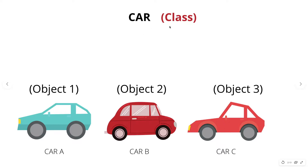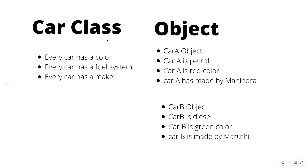Let's look at the objects. In the class, we will explain the example of the car. Every car has a color, a fuel system, and a make. Make and color are part of the fuel system. We will explain the definition of the class.